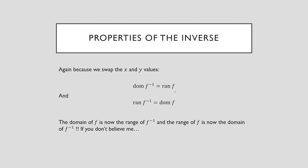So we're swapping the x and y values. Remember, your domain refers to the set of x values for which your function is defined, and the range refers to the set of y values. If you're swapping the x and y values to obtain the inverse, that means your domains and ranges are also going to swap around. Because domains refer to x and range refers to y, the domain of your inverse is going to be equal to the range of your original, because you've swapped the x and y values. And the range of the inverse is going to be equal to the domain of the original.